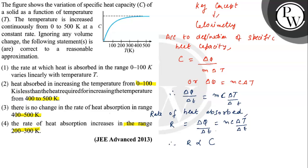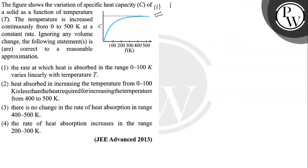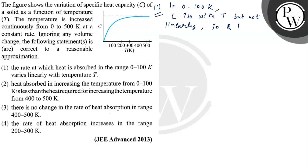Now we will discuss all the options one by one. In option 1, temperature is 0 to 100 Kelvin. C increases with T but not linearly. So R increases with T but not linearly. Therefore, option 1 is wrong.